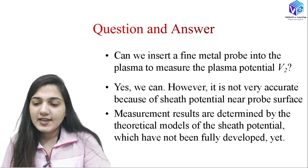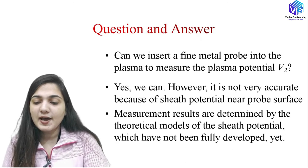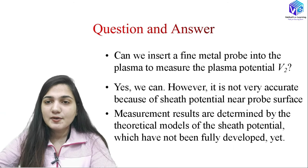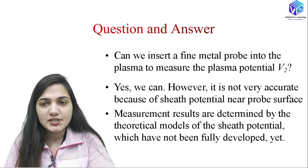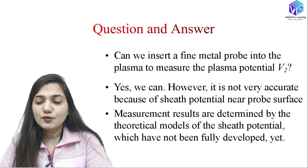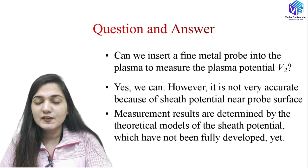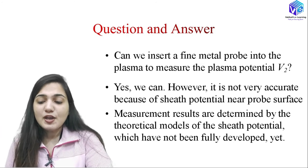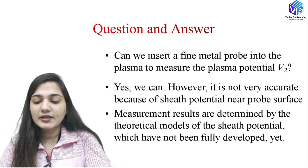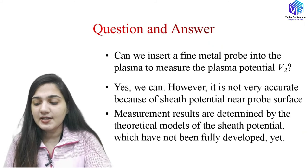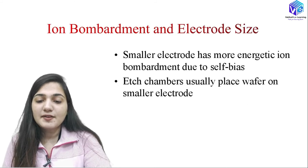The question is: can we insert a fine metal probe into the plasma to measure the plasma potential? V2 is the plasma potential we need to measure, in the range of 10 to 20 volts. We can insert a fine metal probe, however it is not a very accurate method because the sheath potential forms near the probe surface. Measurement results are determined by the theoretical model of the sheath potential, and no fully practical method has been developed yet.